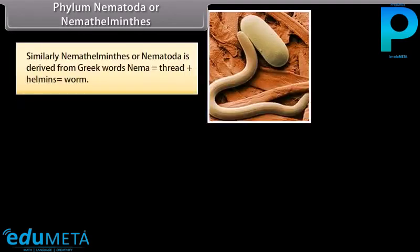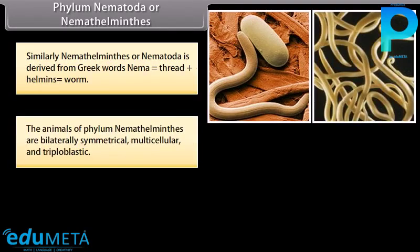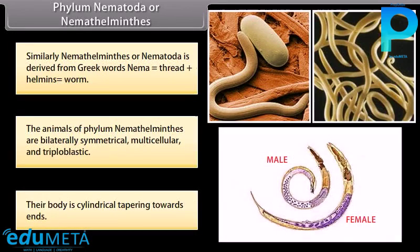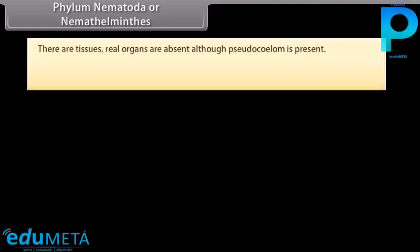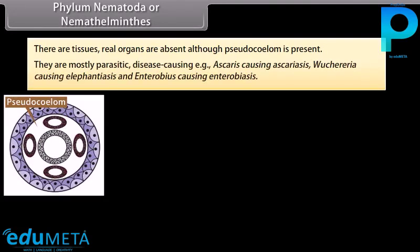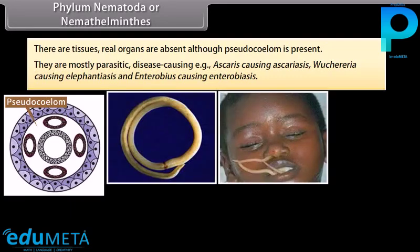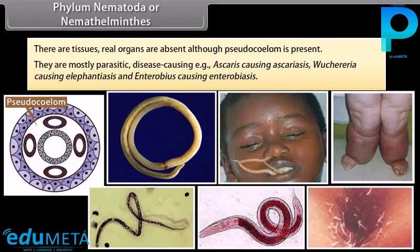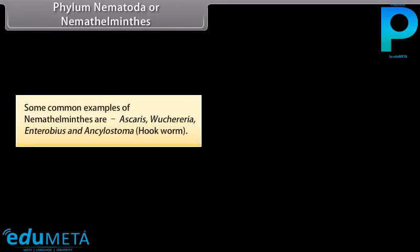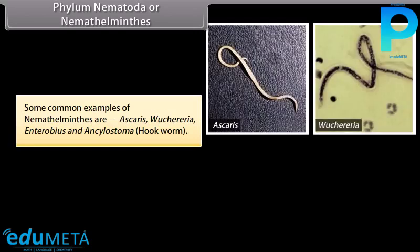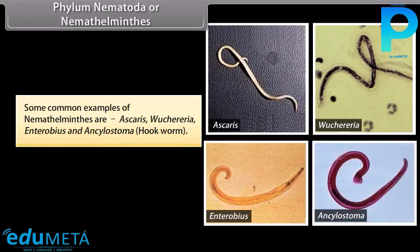Phylum Nematoda (Nemathelminthes) is derived from Greek words nema, meaning thread, plus helminthes, meaning worm. The animals of Phylum Nematoda are bilaterally symmetrical, multicellular, and triploblastic. Their body is cylindrical, tapering towards ends. There are tissues but real organs are absent, although pseudocoelom is present. They are mostly parasitic and disease-causing: e.g. Ascaris causing Ascariasis, Wuchereria causing Elephantiasis, and Enterobius causing Enterobiasis. Common examples are Ascaris, Wuchereria, Enterobius, and Ancylostoma (hookworm).